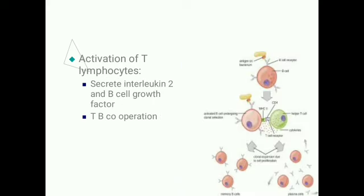Activation of T lymphocytes: T lymphocytes secrete interleukin-2 and B cell growth factor, which causes proliferation of B lymphocytes and transformation of B lymphocytes into plasma cells. Therefore, T lymphocytes are required for activation of B lymphocytes, and this is known as T-B cooperation.